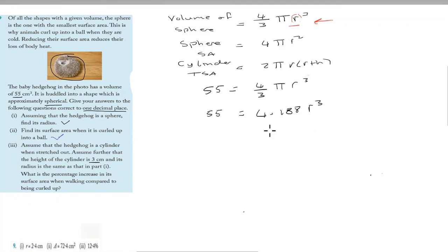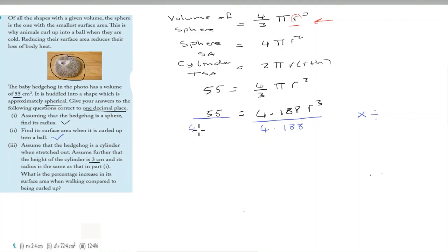Now we want to isolate r. Since 4.188 is multiplied by r cubed, we use the opposite operation — division. We divide both sides by 4.188. Whatever operation we carry out on one side, we have to do exactly the same on the other side. Dividing 4.188 by itself gives 1, leaving us with 1 times r cubed.